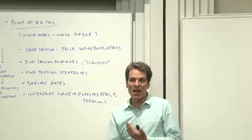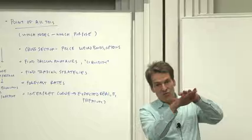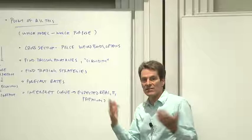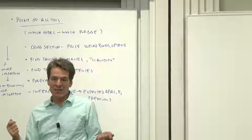One of the big uses is cross-sectional, how to price weird bonds, how to price options given the bonds you have. Another use is to find pricing anomalies, draw a curve across the bond prices, find bonds that are too high or too low. For example, figure out if the on-the-run or off-the-run spread corresponds to liquidity or something of the sort.